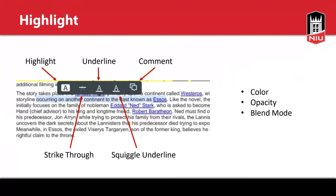You could use the squiggle underline the same way Word does — for example, a red squiggle underline for spelling errors or a green squiggle underline for grammar problems. It's sort of up to you. You know your students better than anyone else, so you need to figure out what works for both of you. Feedback is great for students, but it's no good if you're spending all of your time creating it. This Annotate tool has to help you as well as the students, so always keep that in mind.